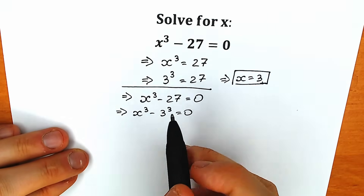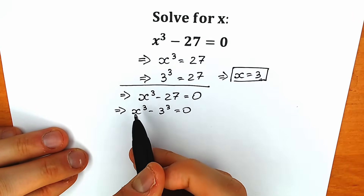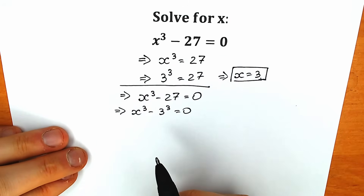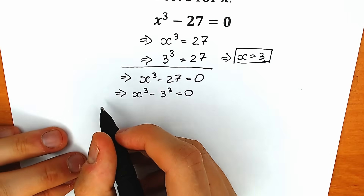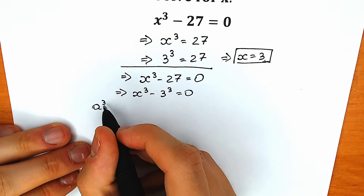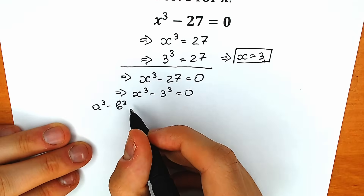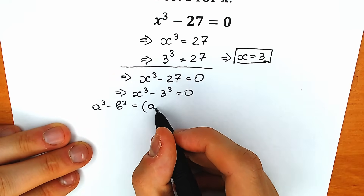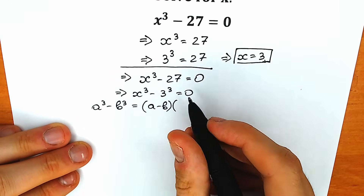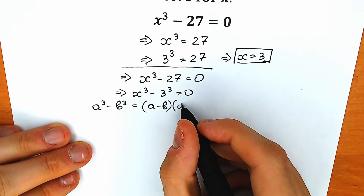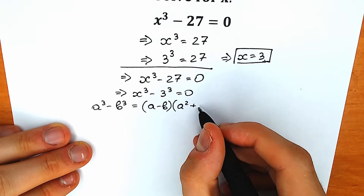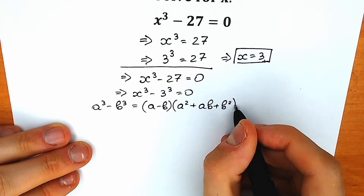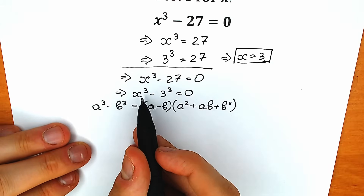Now let's look at this from another perspective. We have a difference of two cubes. Let's remember the school formula: a³ minus b³ equals (a minus b) times (a² plus ab plus b²). That's our formula, and now let's apply it right here.